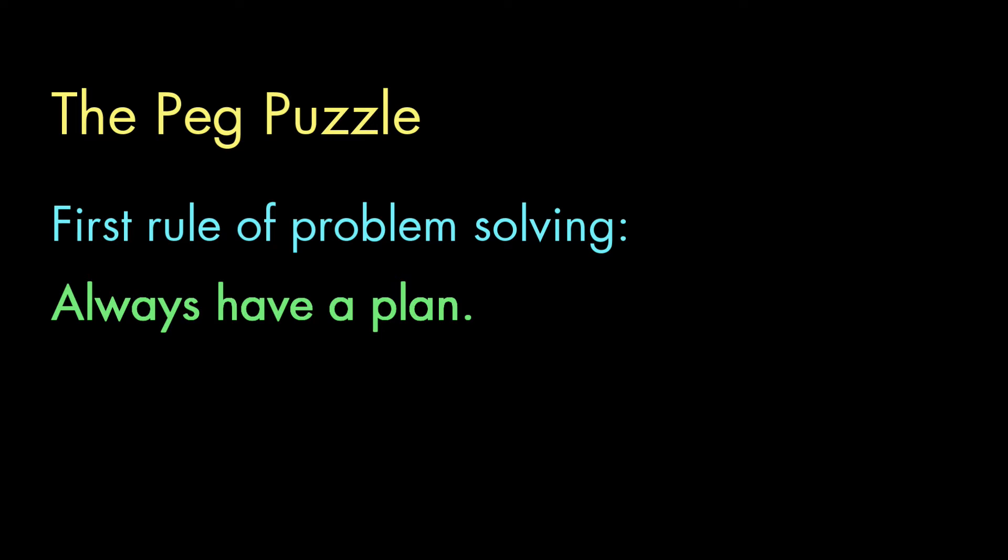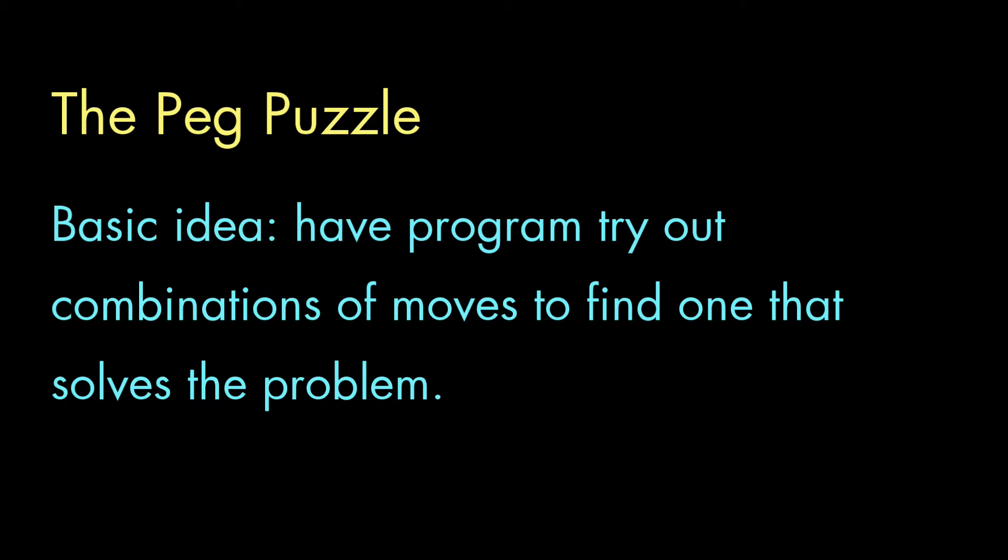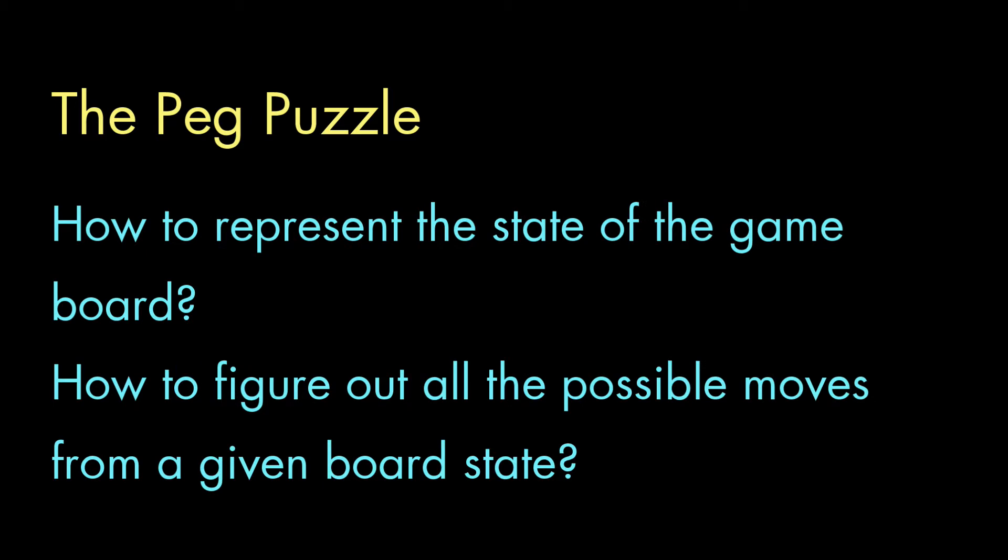I had a number of questions I needed to answer before I even thought about coding. I mean, the basic idea was clear enough. I was going to have the program try out all the possible combinations of moves until it found one that worked. But what about these questions? How do I represent the state of the board at any moment? And how do I find all the legal moves possible from any particular state of the board?